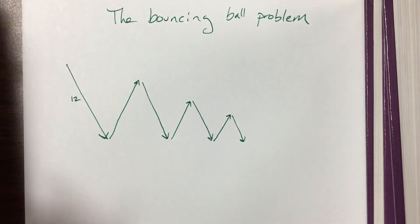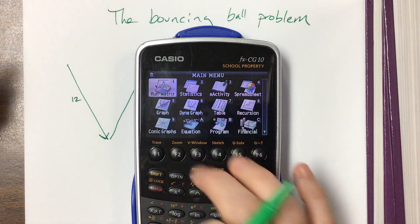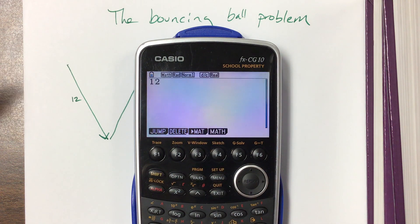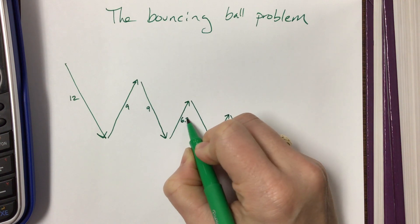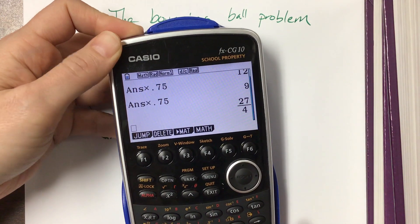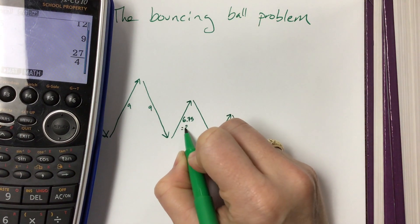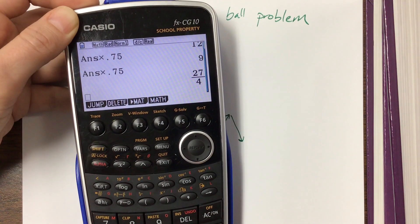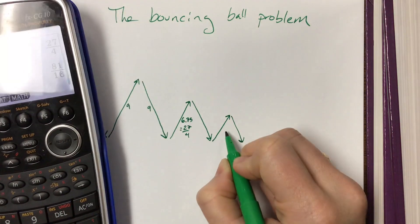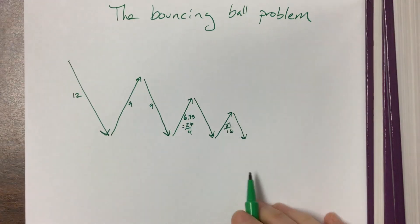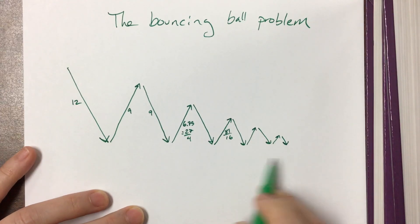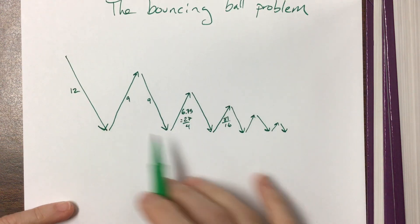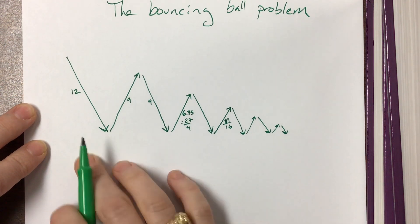So what we have is: it bounces up, and I take the previous number and multiply by 75%. So 12 becomes 9, then 6.75, then 27/4, and so on. Technically it's bouncing — it could bounce to infinity. I like to always draw this picture even if I only do a few drops so I can see what's happening.